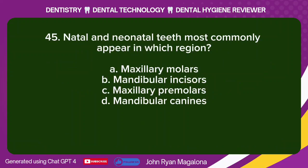Question 45: Natal and neonatal teeth most commonly appear in which region? A. Maxillary molars. B. Mandibular incisors. C. Maxillary premolars. D. Mandibular canines. Answer: B. Mandibular incisors.